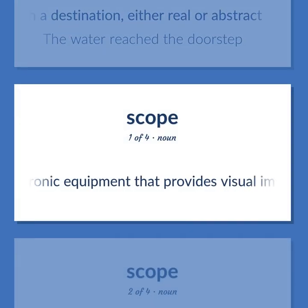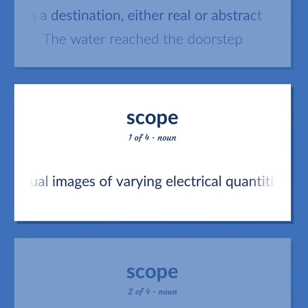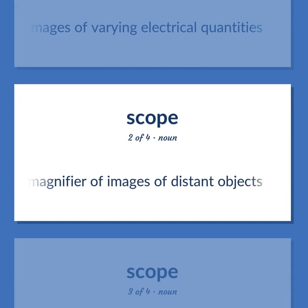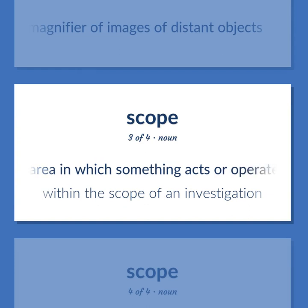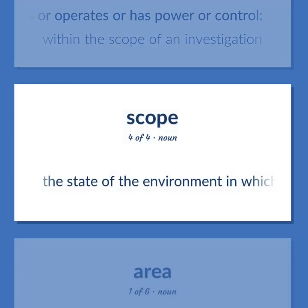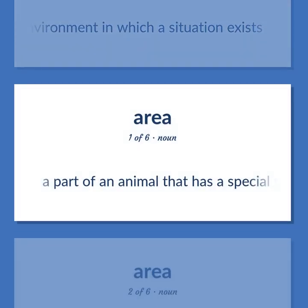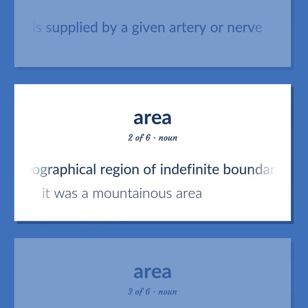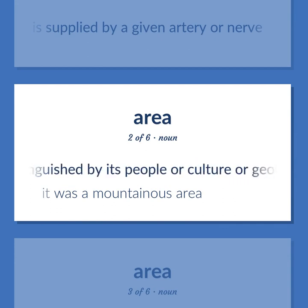Scope: Electronic equipment that provides visual images of varying electrical quantities. A magnifier of images of distant objects. An area in which something acts or operates — within the scope of an investigation. The state of the environment in which a situation exists. A part of an animal that has a special function or is supplied by a given artery or nerve. A particular geographical region of indefinite boundary, usually serving some special purpose or distinguished by its people, culture, or geography.